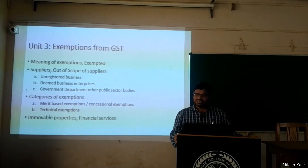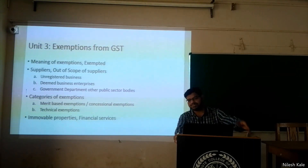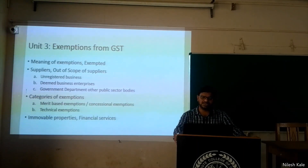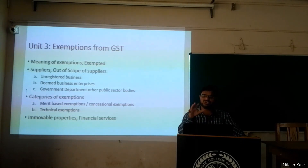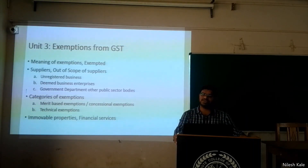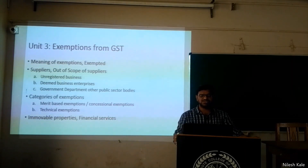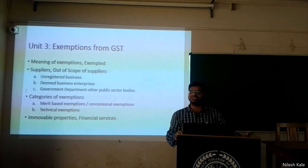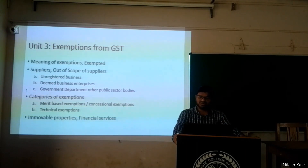Unit 3 covers exemptions from GST — the meaning of exemptions, exempted suppliers, and out-of-scope suppliers. There are three classifications: unregistered businesses, deemed business enterprises, and government departments and other public sector bodies. We are going to understand the exemptions on supply of such goods and services — whether GST is applicable or not — and then categories of exemptions. These include merit-based exemptions, also called concessional exemptions, where concessions are given to suppliers who are going to help the country, and then technical exemptions.